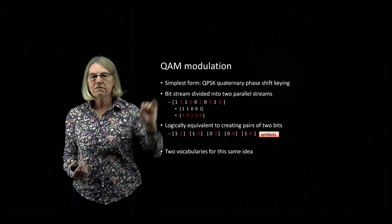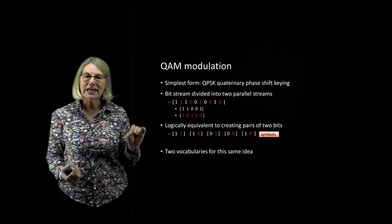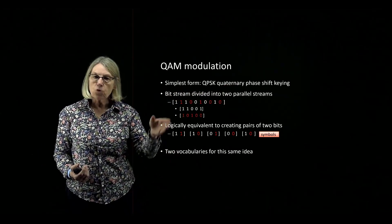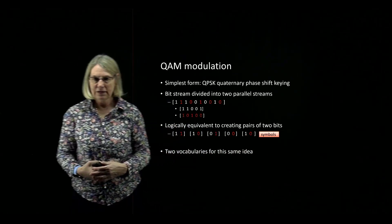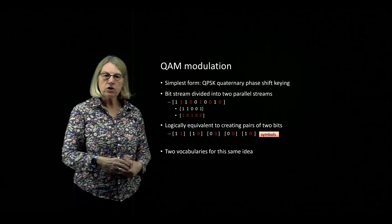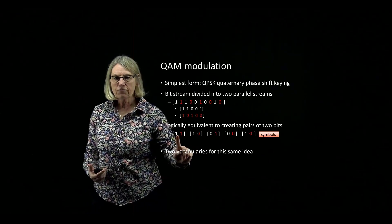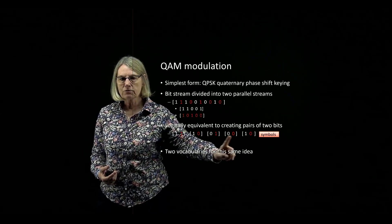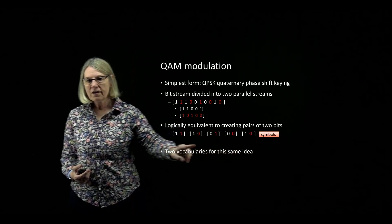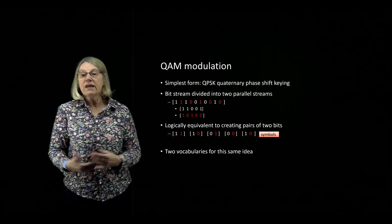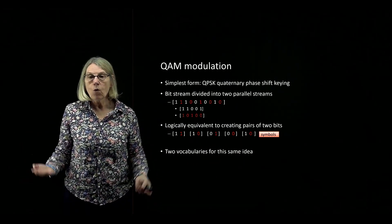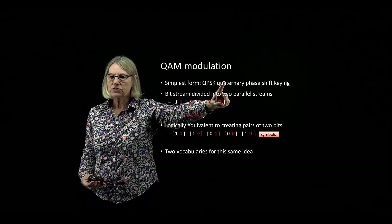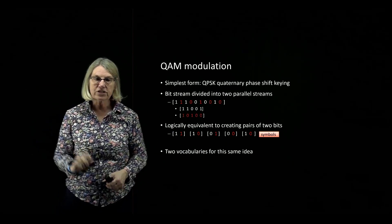When I interpret this modulation scheme as breaking a binary sequence into ordered pairs, these ordered pairs I refer to as a symbol, and this is quaternary. So the first symbol is the ordered pair 1,1, then 1,0, then 0,1, then 0,0. These first four represent the four possible ordered pairs of binary data. And that's why we call it quaternary — because there are four symbols in this modulation format.